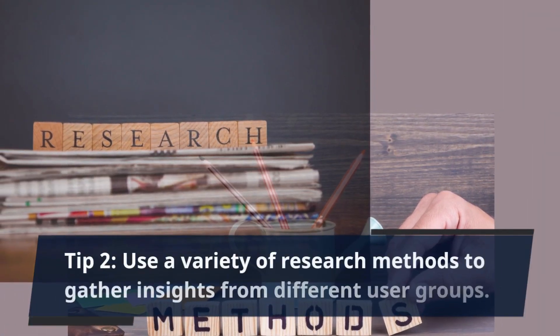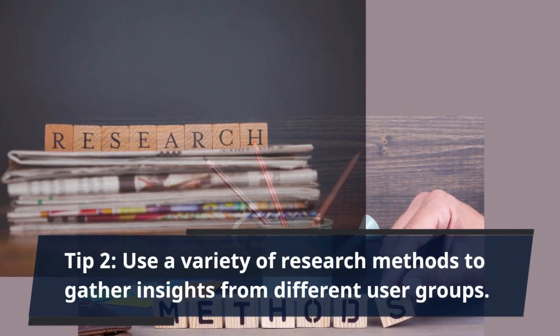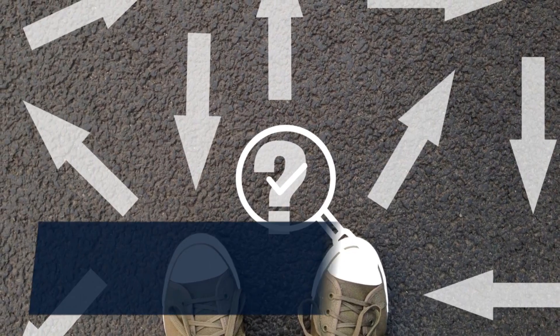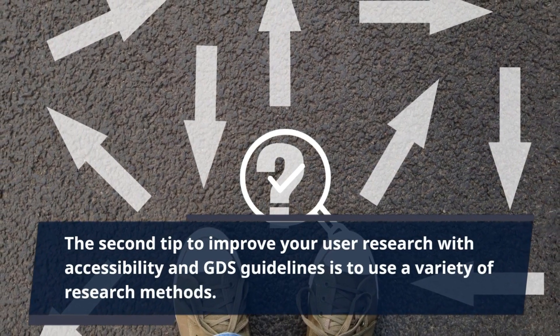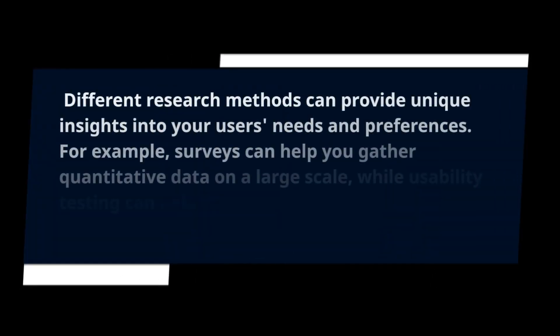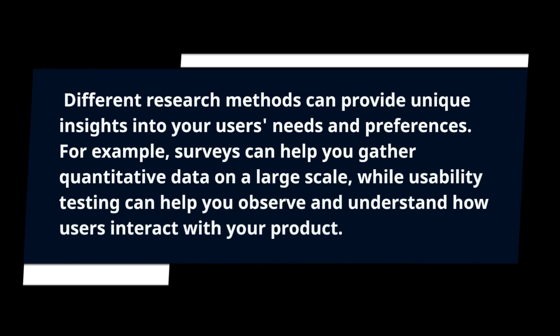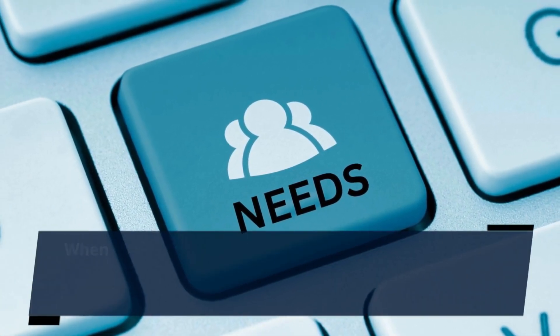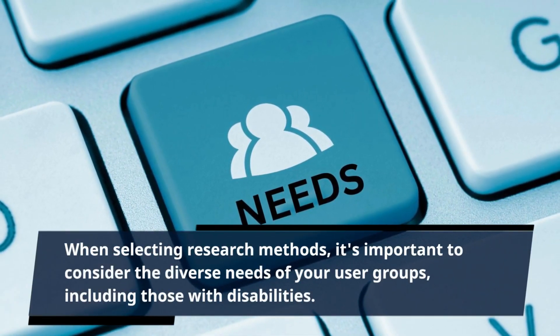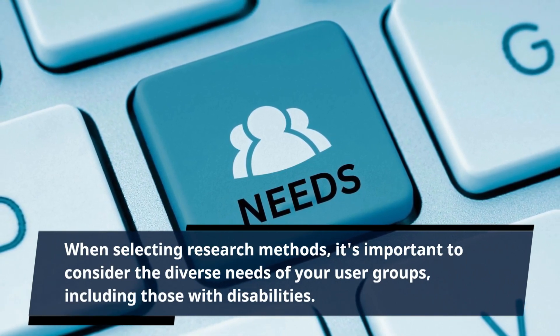Tip 2: Use a variety of research methods to gather insights from different user groups. The second tip is to use a variety of research methods. Different research methods can provide unique insights into your users' needs and preferences. For example, surveys can help you gather quantitative data on a large scale, while usability testing can help you observe and understand how users interact with your product. When selecting research methods, it's important to consider the diverse needs of your user groups, including those with disabilities.